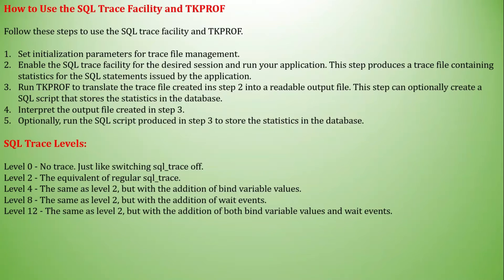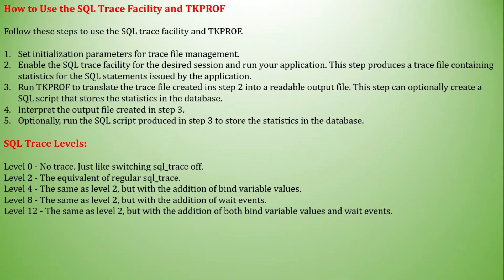What are the SQL Trace levels? There are five levels. Level zero: no trace, just like switching SQL_TRACE off. Level two: the equivalent of regular SQL_TRACE. Level four: the same as level two but with additional bind variable values. Level eight: the same as level two but with the addition of wait events. Level twelve: the same as level two but with the addition of both bind variable values and wait events. Normally, we will use level twelve.